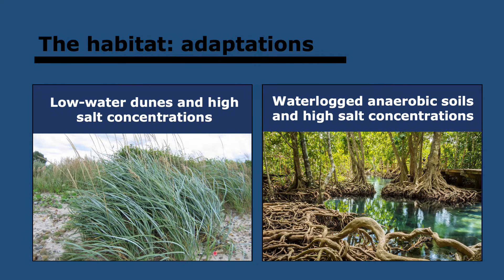Let's start with lime grass, which lives on sand dunes. The issues it faces are water conservation, tolerating high salt concentrations, and sand accumulation. It has a thick waxy cuticle on its leaves to reduce transpiration. It has stomata in indentations, folded in to maintain humid air and reduce transpiration rates. Its leaves roll up during droughts. It has underground stems that grow upwards as sand accumulates and extend deep into the dune to obtain water. It also has accumulation of carbohydrates in the root to increase water uptake by osmosis.